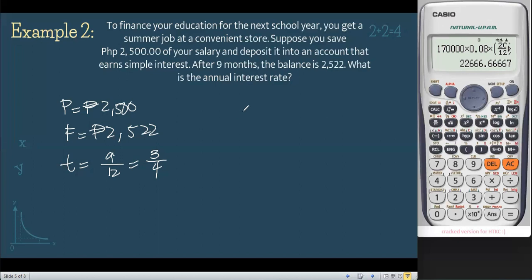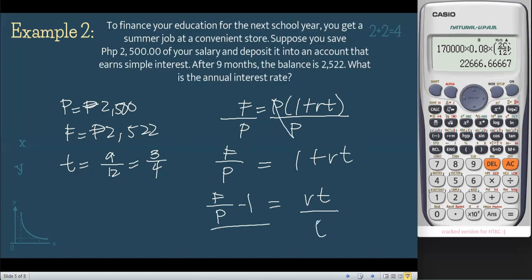Using our formula—between the two formulas, the one with future value is F equals P times 1 plus RT. We need to manipulate this formula to solve for R. Divide both sides by P: F over P equals 1 plus RT. Since there's a 1, transfer it to the other side: F over P minus 1 equals RT. We're looking for rate, so divide both sides by T.